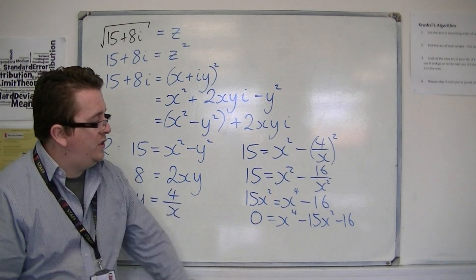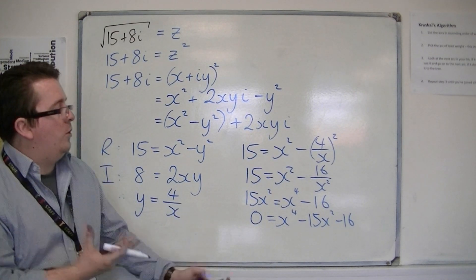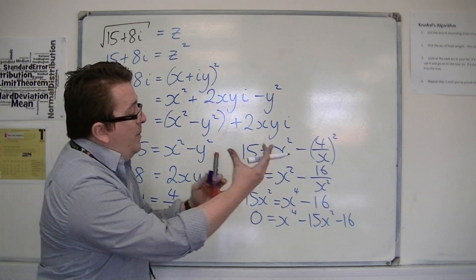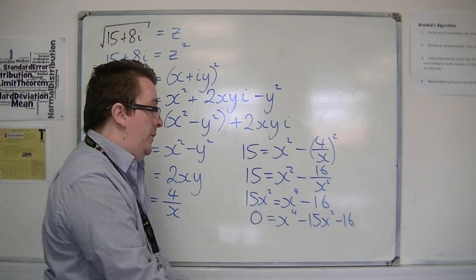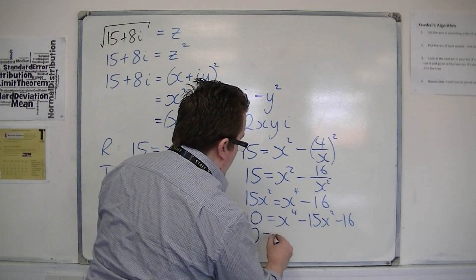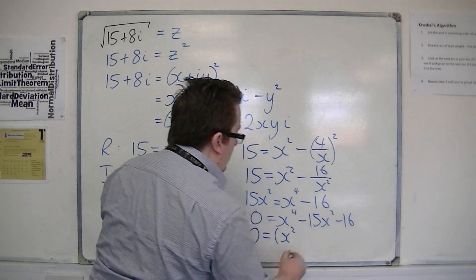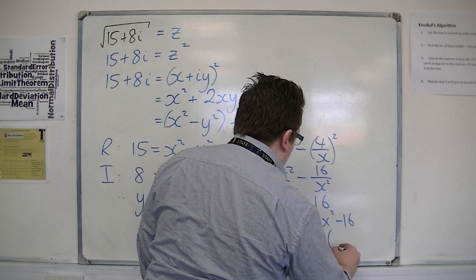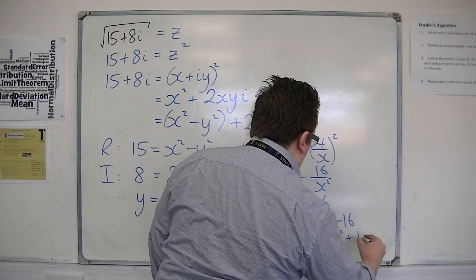Now this is a hidden quadratic. It doesn't look like a quadratic because it's got this number 4, it's actually a quartic, but it can still be factorised. So if I factorise it, I can write that as x squared minus 16 times x squared plus 1.